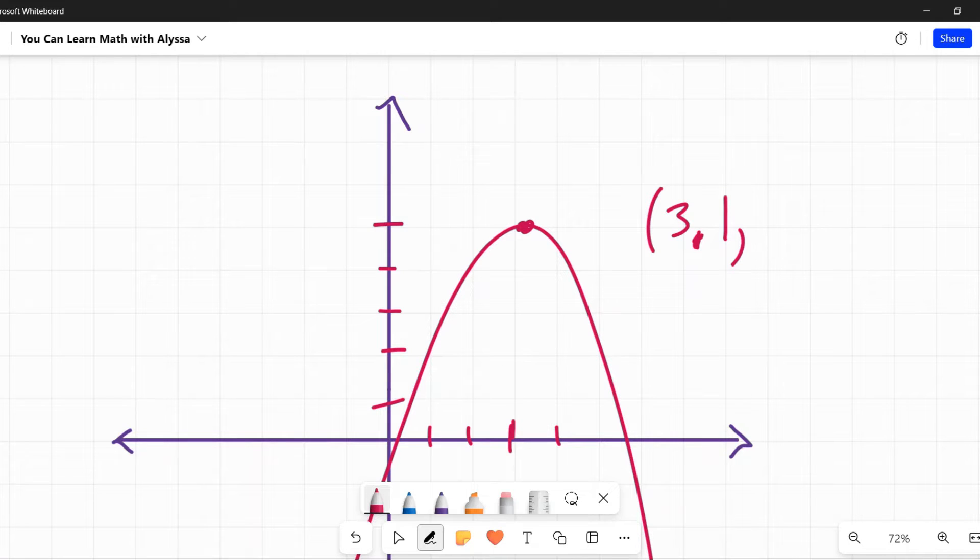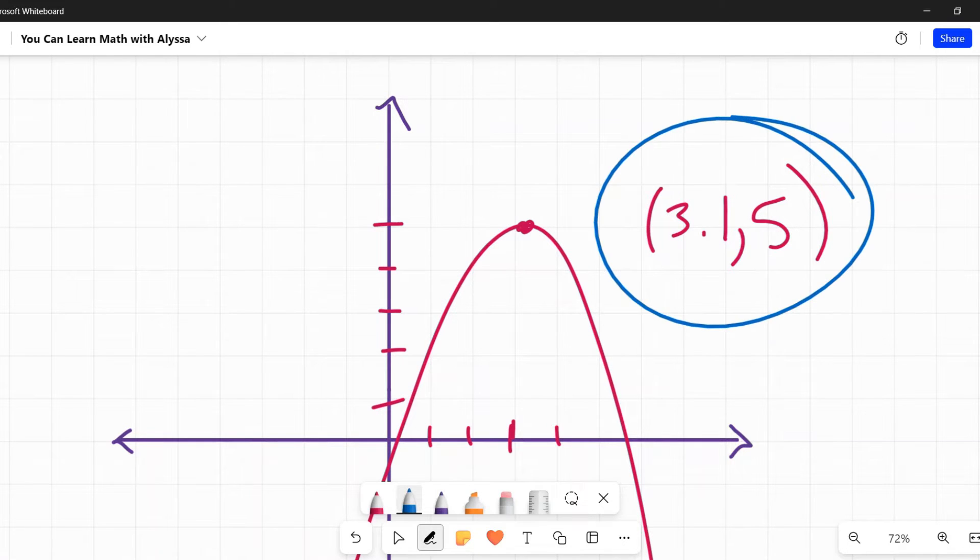But it looks like it's about 3.1 and 5. It looks like my Y value is 5. That looks to be my maximum value for this. So if you have an SAT question, you're given a graph, and they say what is the X value at the maximum of this quadratic, it's going to be 3.1. If they ask for the Y, it's going to be 5. If they want the coordinates, it's 3.1 and 5. So that's the more straightforward one.